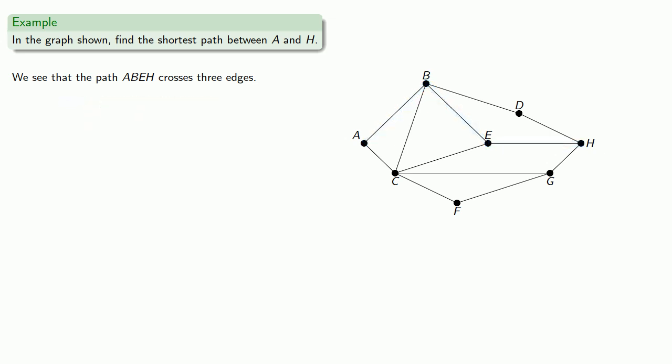But so does the path A, C, E, H, and also A, C, G, H. So, in fact, there are three shortest paths between A and H.